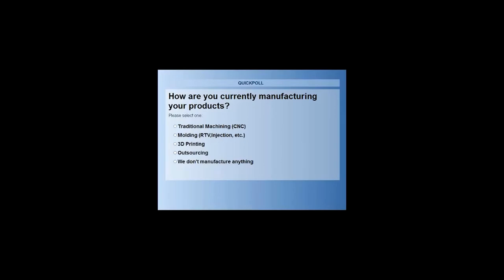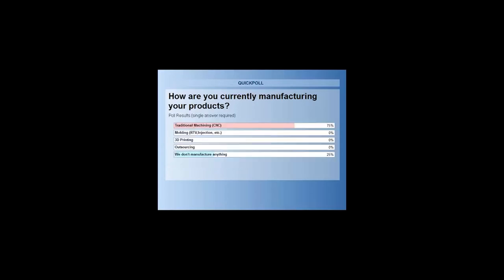Another quick question: how are you currently manufacturing your parts? Traditional machining — CNC or manual — some sort of molding like injection molding, RTV molding, or rim molding? Maybe you're already 3D printing, or you're outsourcing, or maybe you're a service-oriented company. The results are pretty overwhelming in traditional CNC. I was hoping to see some molding and some printing already out there, so kind of surprised, but we got what we got.